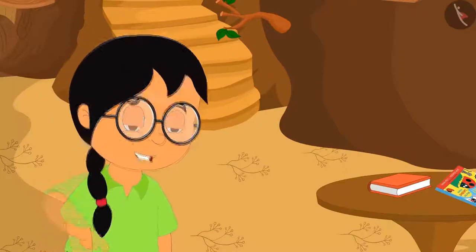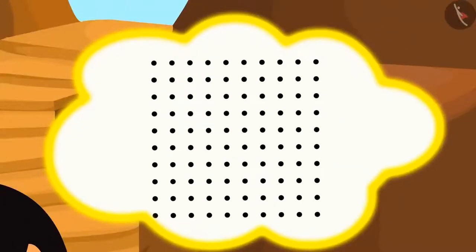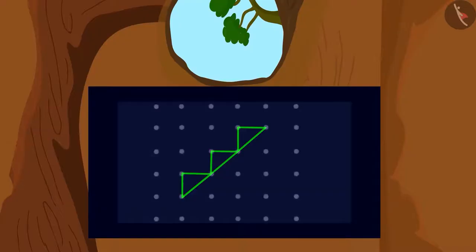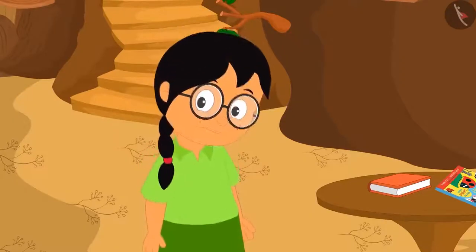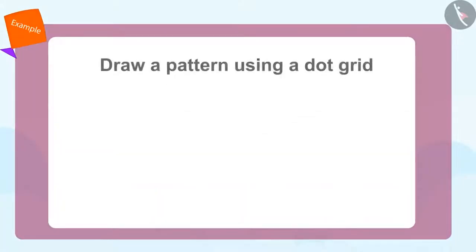After yesterday's defeat, she starts thinking about how to make this pattern using the dot grid. What is this? She can suddenly see a dot grid behind the pattern on the TV. Minoo starts jumping happily. Let's see how we can make this pattern using the dot grid.